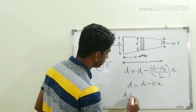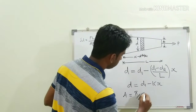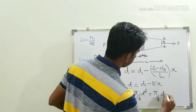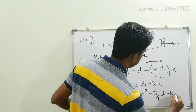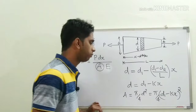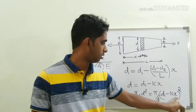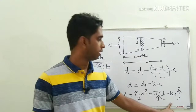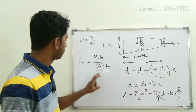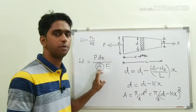The area at the differential element is A = (π/4)D² = (π/4)(D1 − Kx)². We have now obtained the equation for area in terms of x, and we can substitute this value of area into the deformation equation.